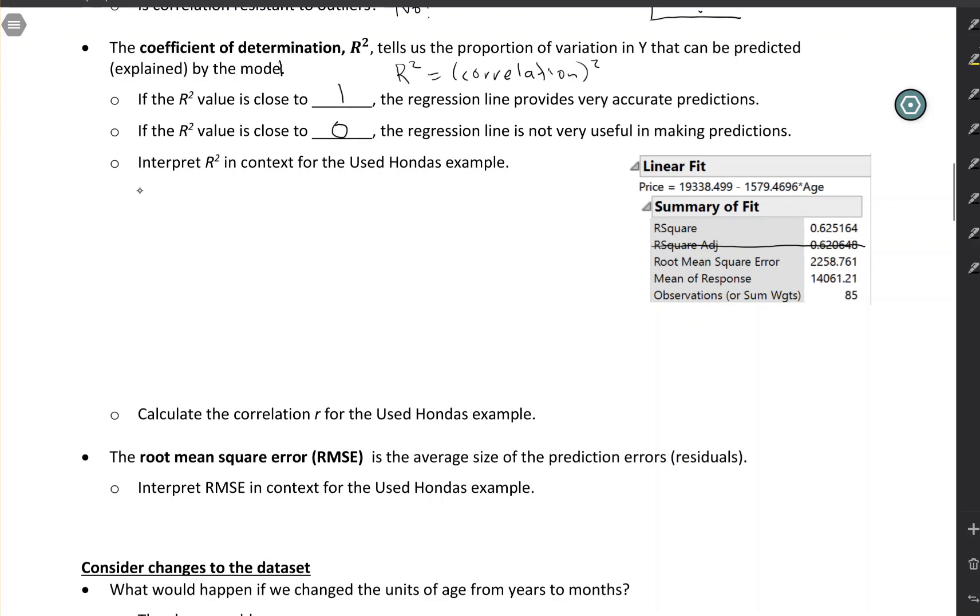Okay, so we've got 0.625. I'm going to write it as a percent. So I'm going to say 62.5% of the variability in y. So in this case, the variability in selling prices. 62.5% of the variability in selling prices is explained by the model using age. So this is a measure of how strong the relationship is. Here we had a fairly strong relationship. So we explain over half of the variability just by looking at the age of the car.